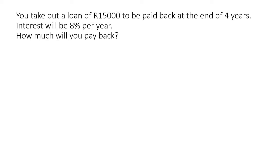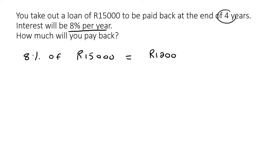We're going to calculate 8% of 15,000. If we work that out, we end up with 1,200 rand. But we need to keep in mind that is 8% for one year, and we have four years. So we multiply that by four, and that's going to be 4,800 rand. That is the extra penalty the bank is going to make you pay back.